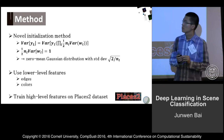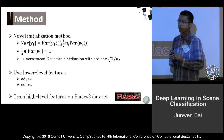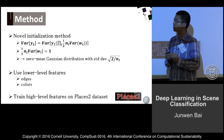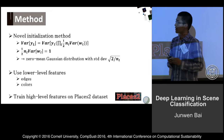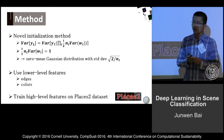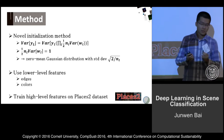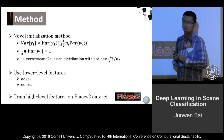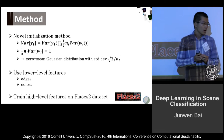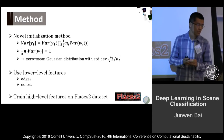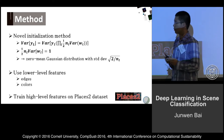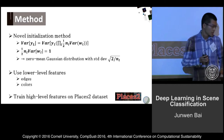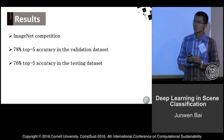Besides, we use some low-level features, such as extracting colors from the models trained for image classification tasks, as the initialization of our model. Furthermore, for the high-level features, we train them on the Places2 dataset.